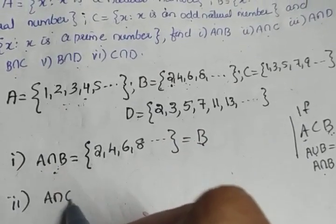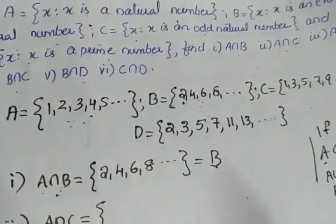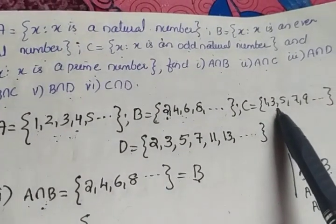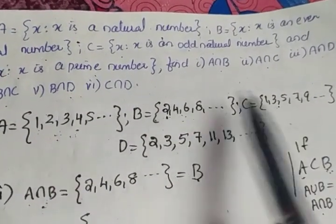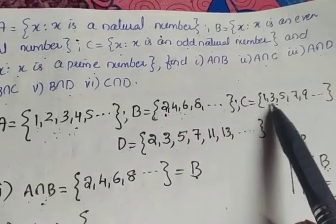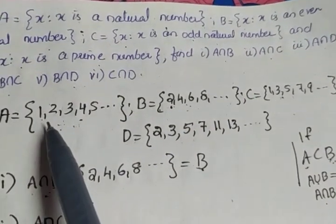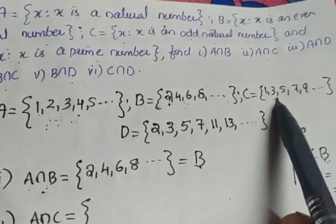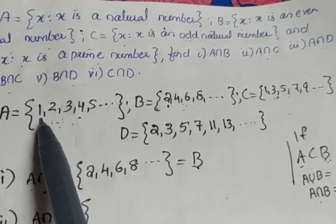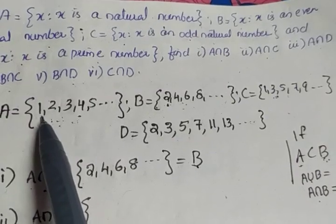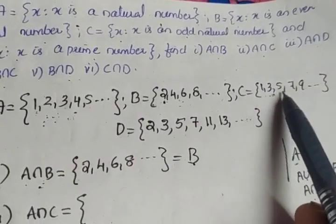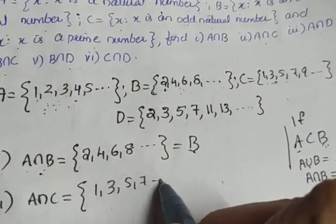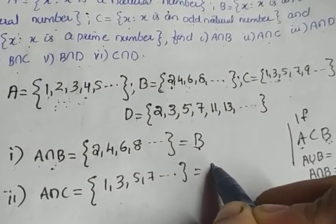Second question: A intersection C. A contains all natural numbers and C contains only odd integers. C is a subset of A, so A is the bigger set. While taking A and C intersection, we get C. The common elements are {1, 3, 5, 7, ...}, which is equal to set C.